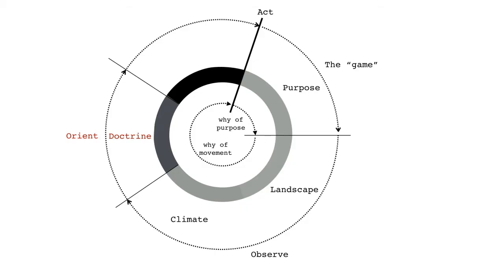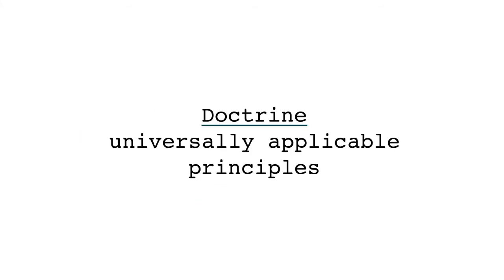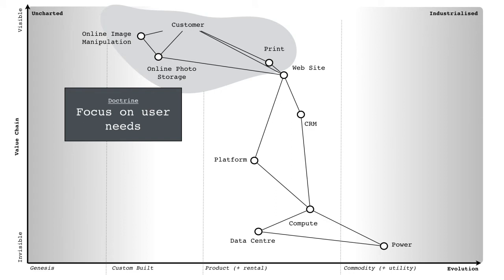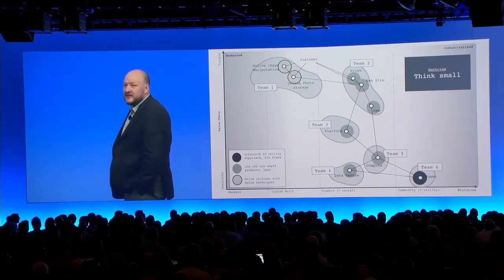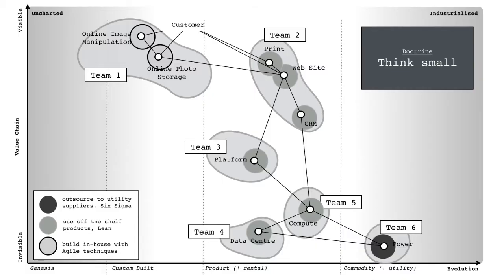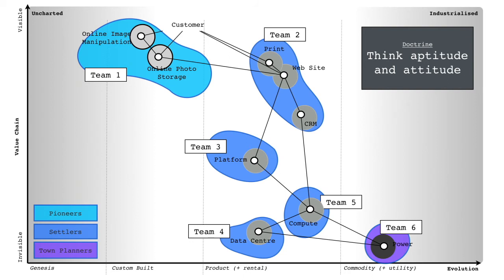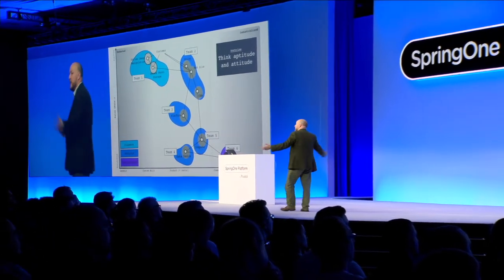Of course, once you start to learn climatic patterns, then you get into doctrine — the universally applicable principles. Things like using a map. It's a good idea, surprise, to focus on user needs, which is the top of the map. The second thing you learn is to use appropriate methods at the same time: outsource stuff on the right, build off the shelf, maybe use Lean for the middle, build in-house agile on the left-hand side. Then you learn to think small — break things into small components, microservices, build small teams. Then you start to discover you have different attitudes: cell-based structures. The types of people you need on the left, in the uncharted world — whether it's marketing, finance, or engineering — are different to the types you need on the right, and different again to the types you need in the middle. And you need brilliant ones of all of them.